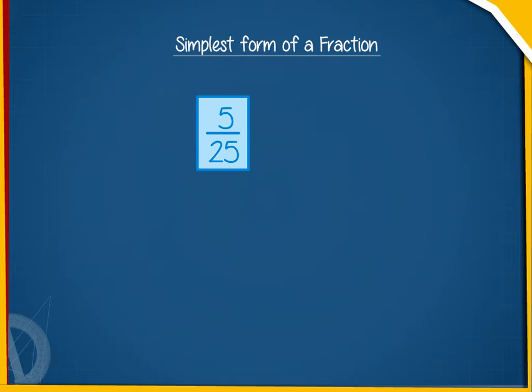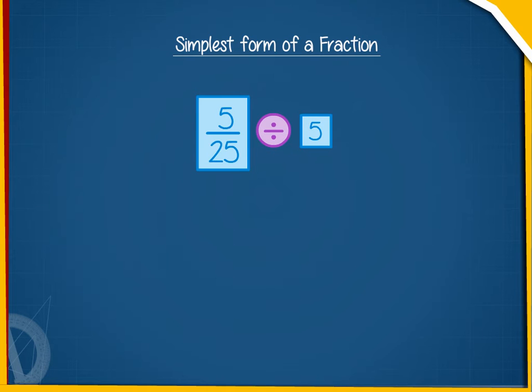Take the fraction 5 by 25. The HCF of both 5 and 25 is 5. When we divide both 5 and 25 by 5,